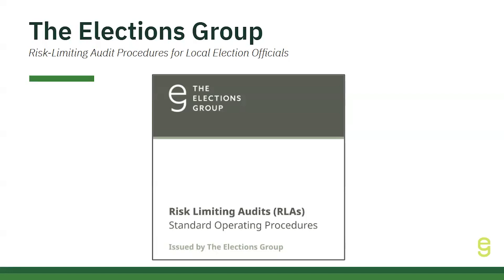An RLA gives statistical evidence that the machine-tabulated results are consistent with what a full hand count of ballots would reveal. Unlike fixed percentage audits, an RLA limits the risk that the wrong election result will be certified because of tabulation error. RLAs adjust sample sizes based on contest margins, increasing efficiency and accuracy. There are three main methods for conducting an RLA, and where and how ballots are scanned will factor into which method works best. The first method is ballot comparison, where specific ballots are compared to cast vote records from the election management system, or EMS, looking for discrepancies between the two. The second method is ballot polling, where randomly selected ballots are tallied and results are compared to reported margins, looking for a similar or greater margin.